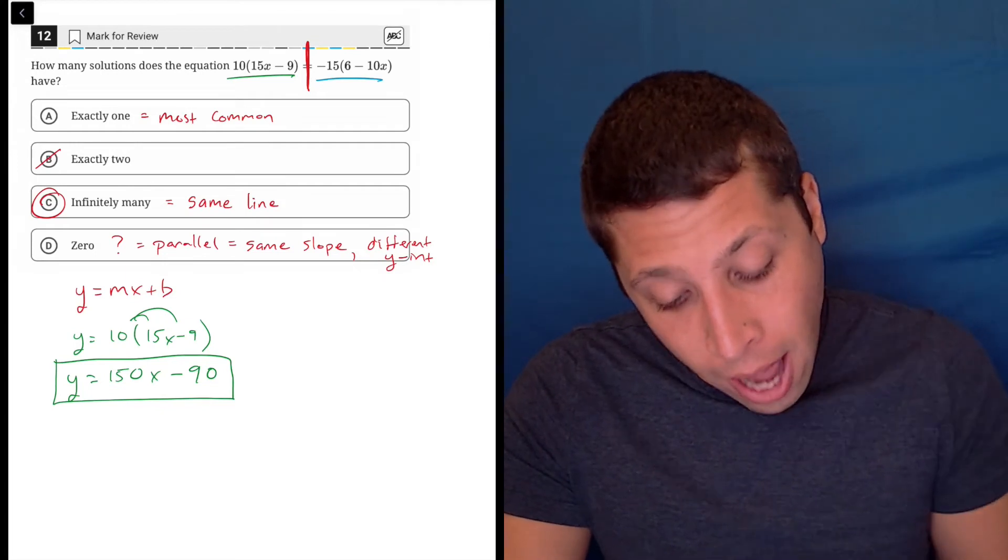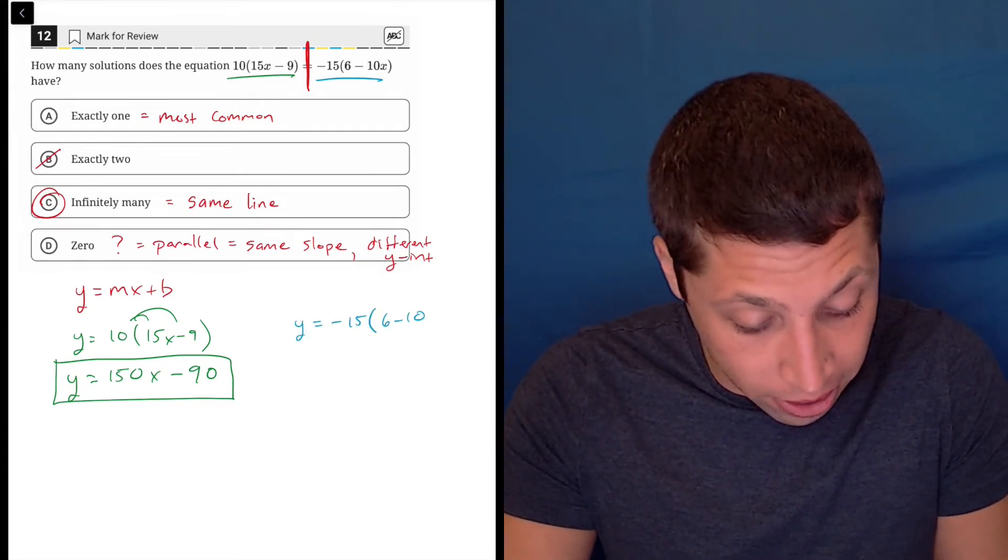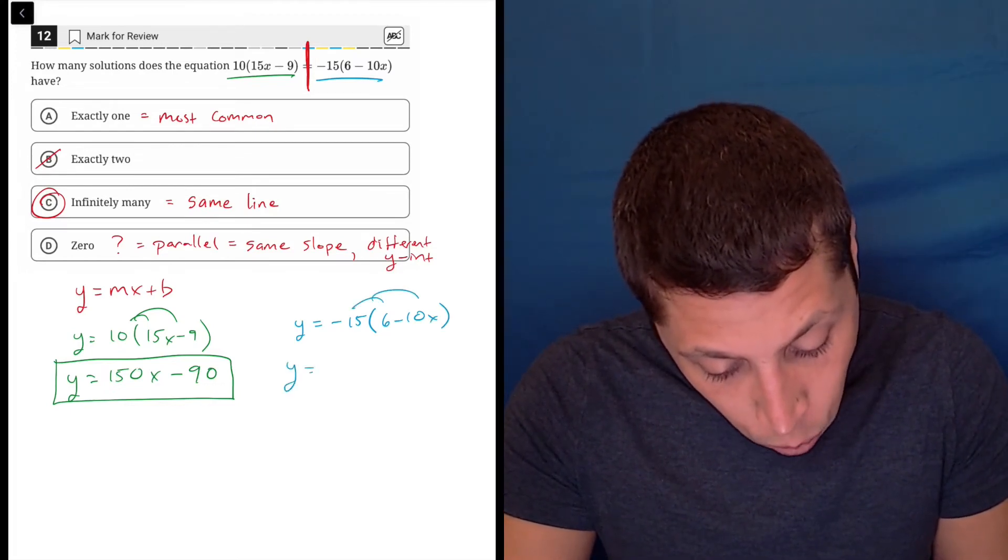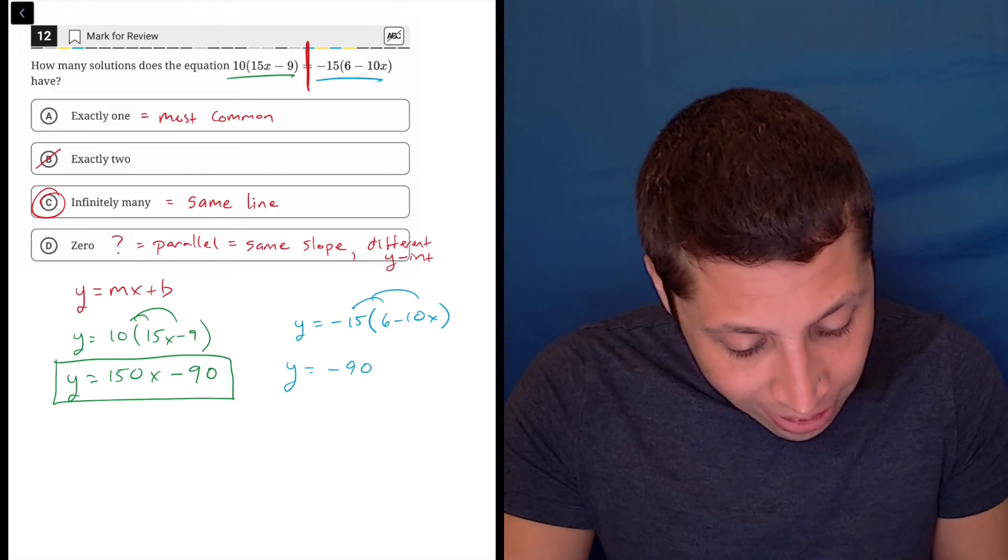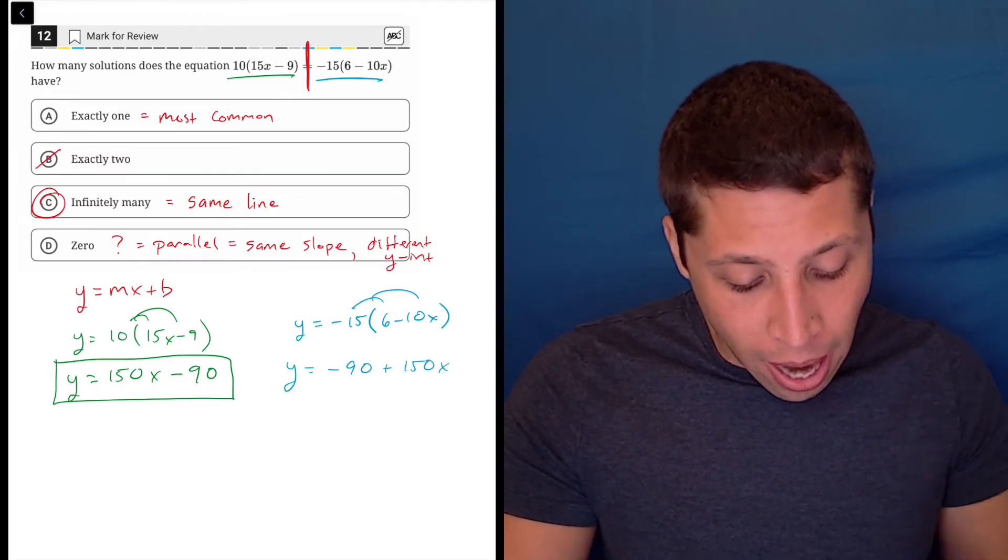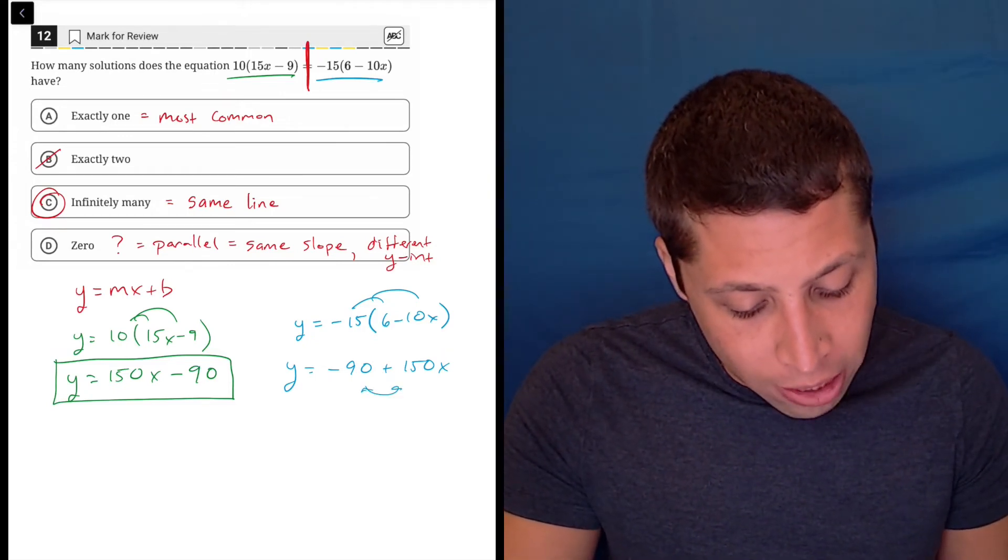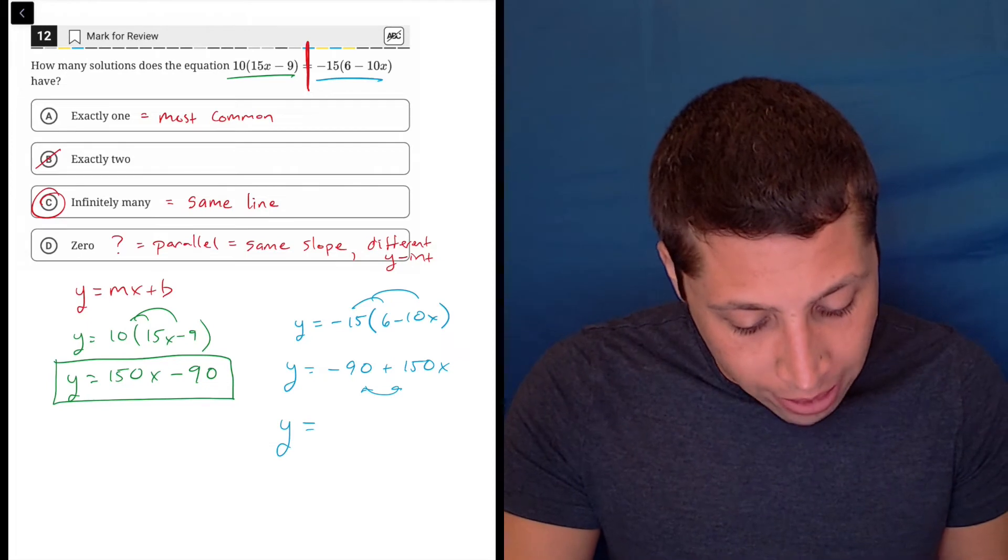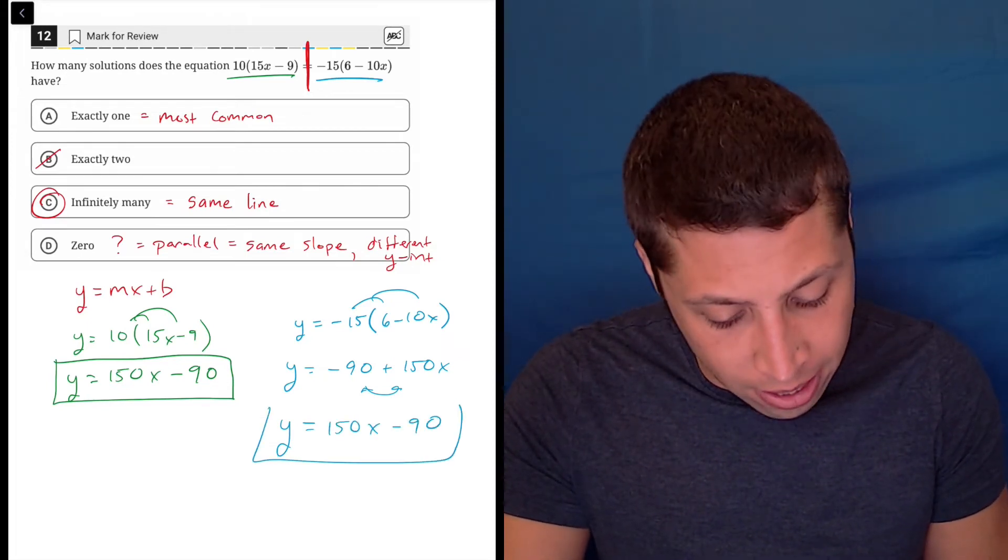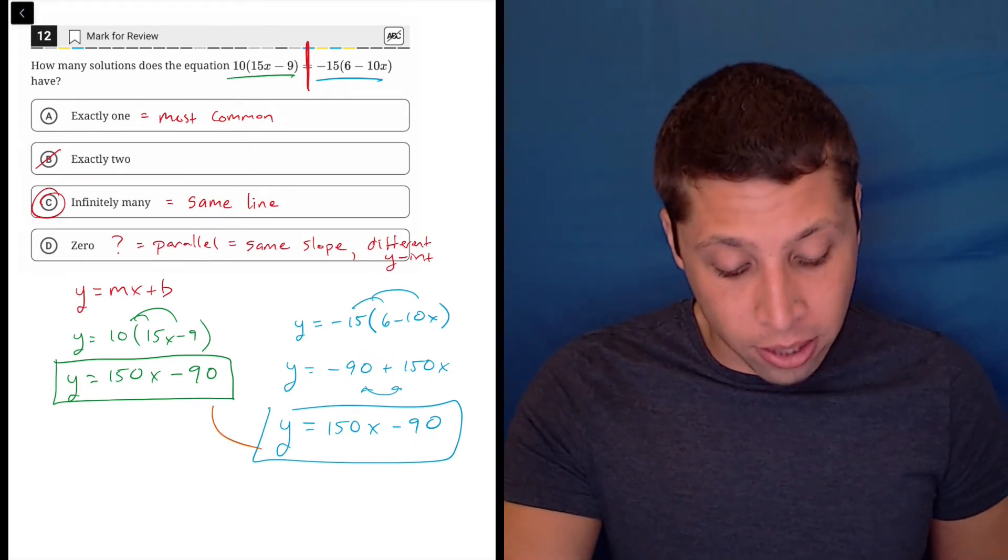Let's do the same thing for the other side. y equals negative 15 times 6 minus 10x. Again, we're going to distribute. We're going to get y is equal to negative 90 plus 150x. And some of you may already see it, but I would still want to get this into y equals mx plus b, which means rearranging these two components. So that's going to be y is equal to 150x minus 90, which is exactly the same as what we had on the other side.